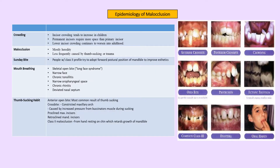In the epidemiology of malocclusion, incisor crowding tends to increase in children because permanent incisors require more space than primary teeth. Lower incisor crowding has a tendency to continue to worsen into adulthood because of late mandibular growth.